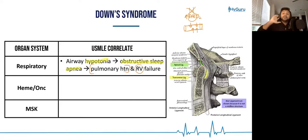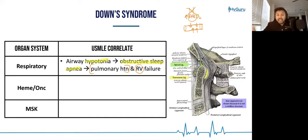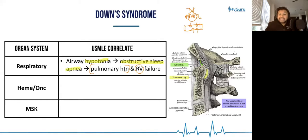Patients with cor pulmonale present with JVD, hepatomegaly, and peripheral edema, with clear lung sounds — differentiating right heart failure from left. In kids, heart failure presents as failure to grow, tachypnea with feeding, and excessive sweating, because the heart creates a hypermetabolic state.